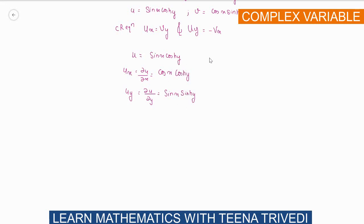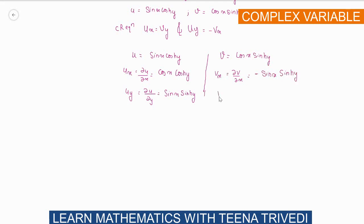Now for v = cos(x)·sinh(y): differentiating with respect to x gives ∂v/∂x = −sin(x)·sinh(y). And ∂v/∂y = cos(x)·cosh(y), because the differentiation of sinh(y) is cosh(y).